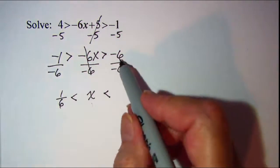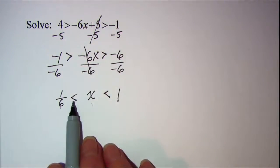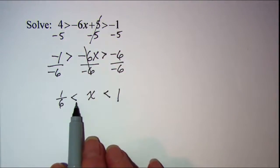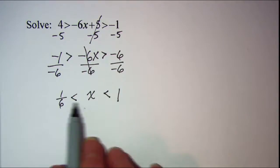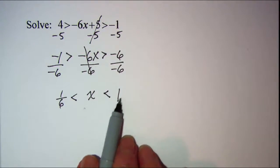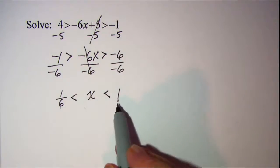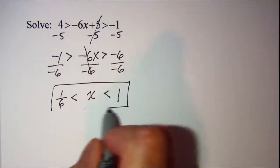And negative six divided by negative six is one. And notice that now it's the normal form. Usually with a three-part inequality you'll see less than symbols, and the reason is usually this number is smaller than this number on the right. So this is more of what you would see normally. There's my solution, x is between one-sixth and one.